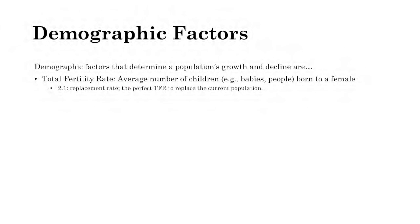The replacement rate is not two — you need 2.1, a little bit above two, because other factors cause people to die, so you want it slightly higher. Emigration is one such factor.